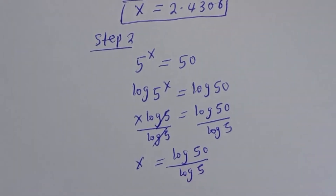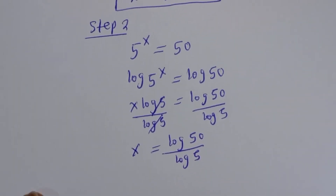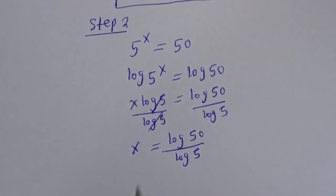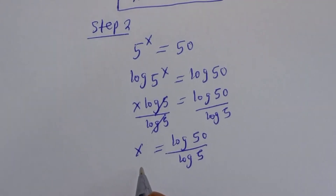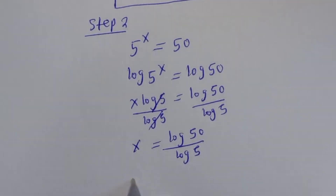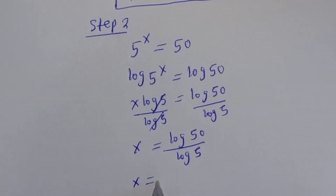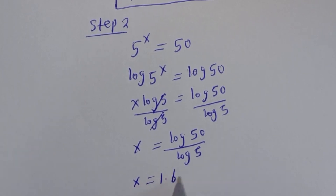If you press your calculator, log 50 over log 5 gives s equal to 1.6990 divided by... S is equal to 2.4306.